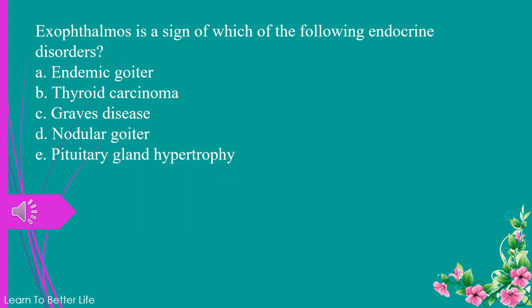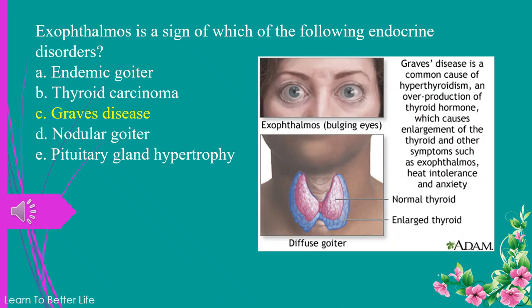Exophthalmos is a sign of which of the following endocrine disorders? a. endemic goiter. b. thyroid carcinoma. c. Graves' disease. d. nodular goiter. e. pituitary gland hypertrophy. The answer is c. Graves' disease.